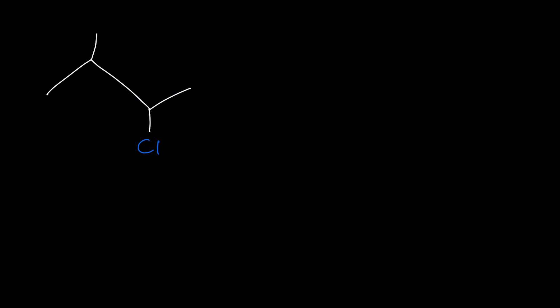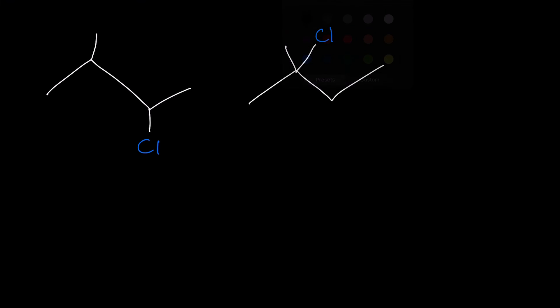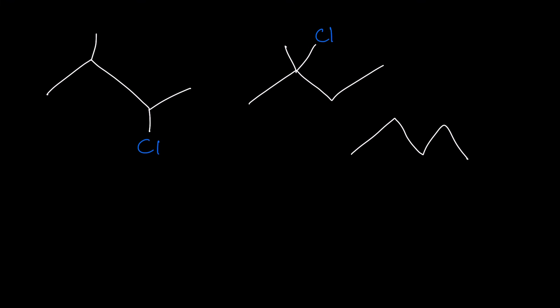Now let's compare a few examples and see in which alkyl halide an SN2 reaction would be most likely to occur. Compare these examples and determine which one is best for an SN2 reaction and which one is worst — rank them. What we need to pay attention to is the carbon that the chlorine is on. In the left example, the carbon that the chlorine is on is attached to two other carbons, so it's a secondary carbon — a secondary alkyl halide.